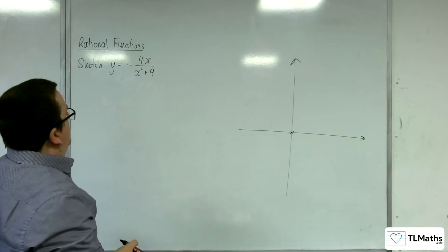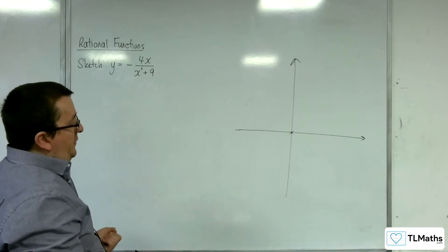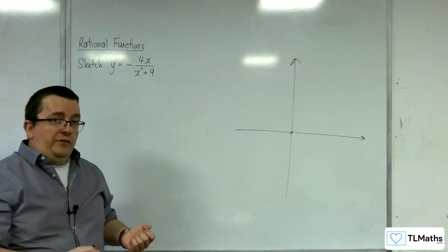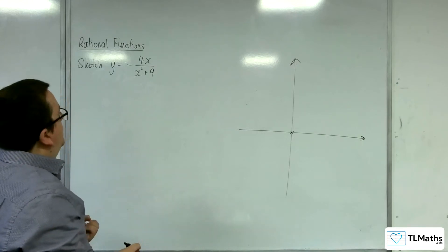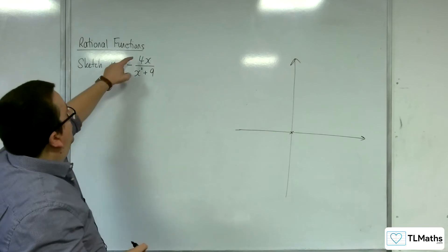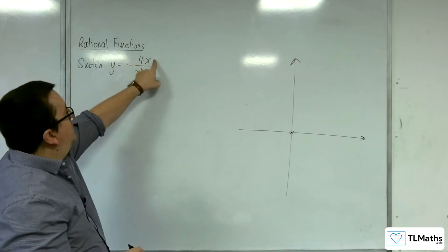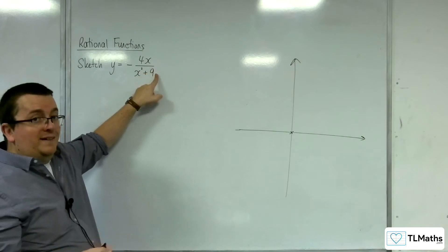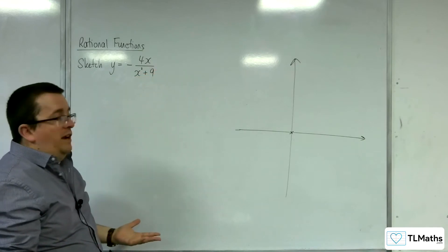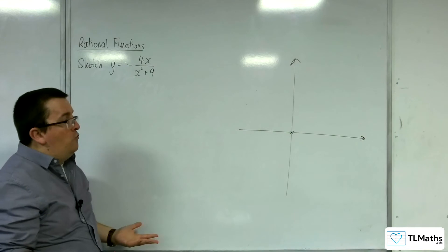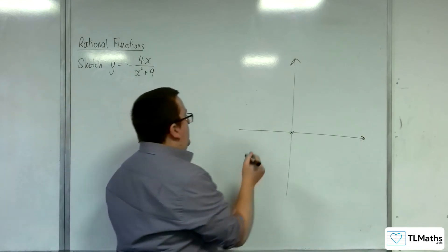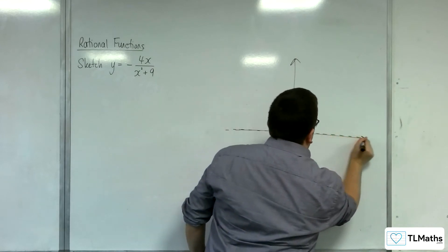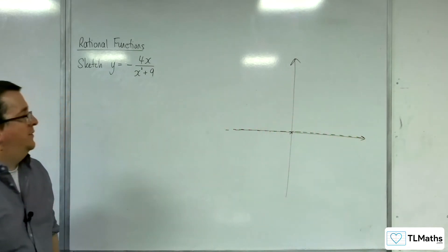So the other thing that we need to consider is any horizontal asymptote. Now, because the numerator is of a lower power polynomial than the denominator, that means that it's just going to be tending to y equals 0. So y equals 0 is a horizontal asymptote. So the x-axis.